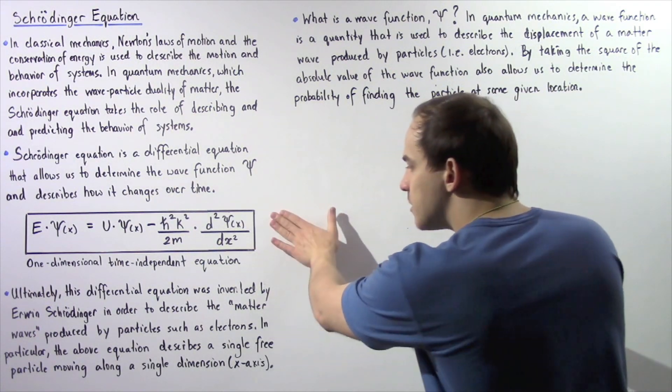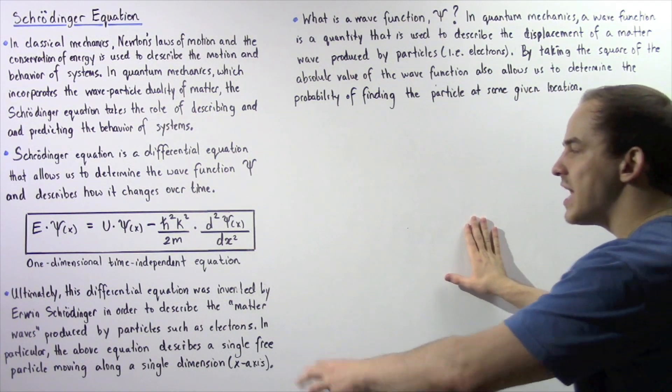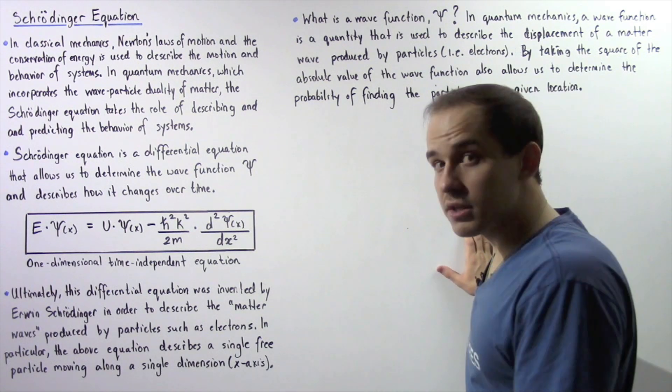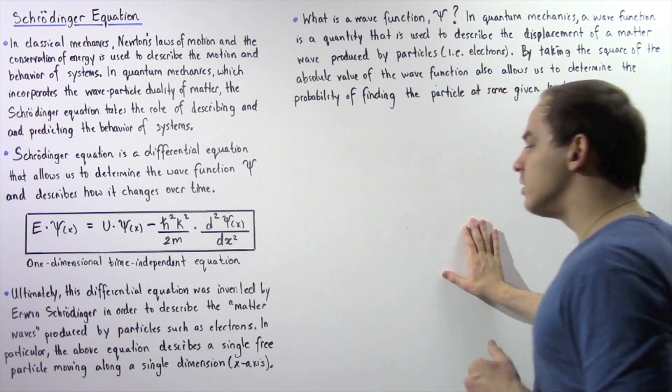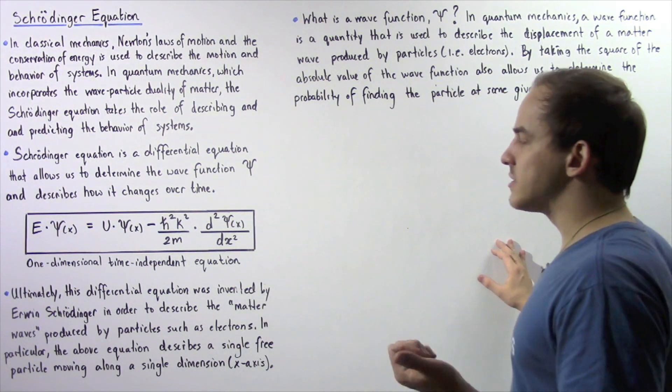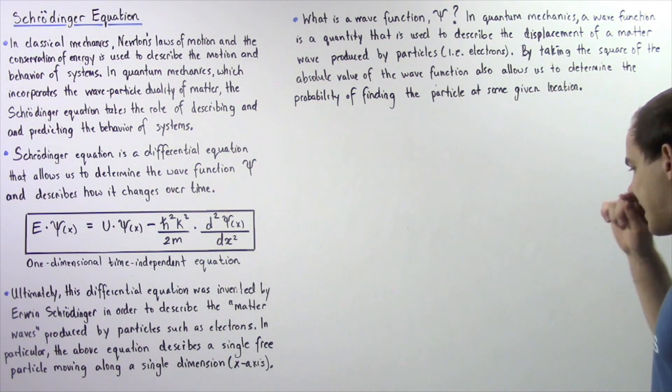In particular, the above equation describes a single free particle, electron, moving along a single dimension, let's suppose along the x-axis.